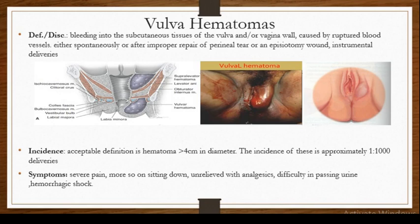Vulva hematoma is basically bleeding into the subcutaneous tissue of the vulva or the vaginal wall. It is usually caused by rupture of blood vessels either spontaneously, or after improper repair of a perineal tear or an episiotomy wound. Instrumental deliveries also play a major role in the cause of vulva hematoma.